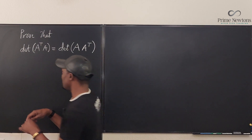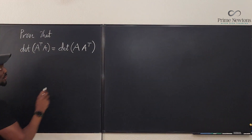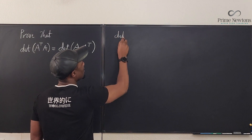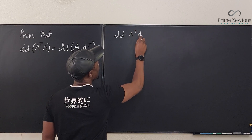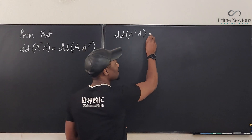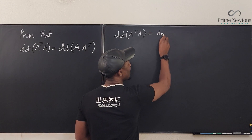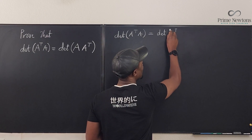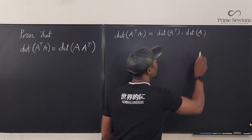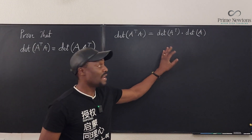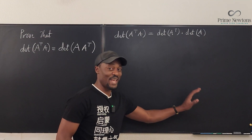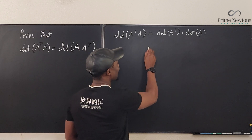So we say: the determinant of A transpose times A. We know that the determinant of a product of matrices is the product of the determinants, so it equals the determinant of A transpose multiplied by the determinant of A. This is one of the basic properties of determinants, which I explained in a previous video.